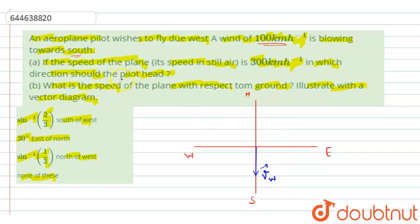Now to find in which direction the pilot should head, see the pilot wishes to fly in the west means the direction of the plane would be in the west direction. This will be the direction of the plane due west. So this is VP. So now we can say that the velocity of plane with respect to wind would be given as VP minus VW. So this is the direction in which the pilot should head.